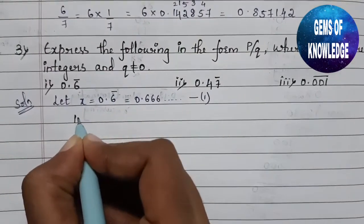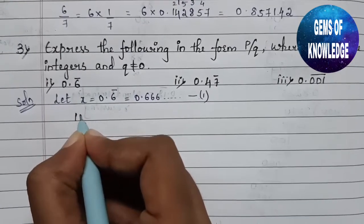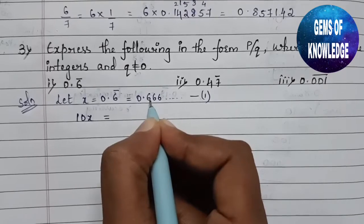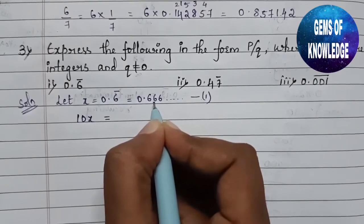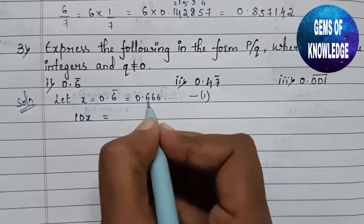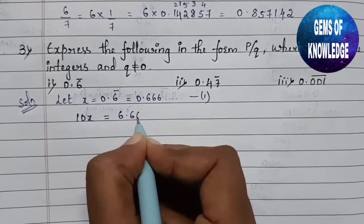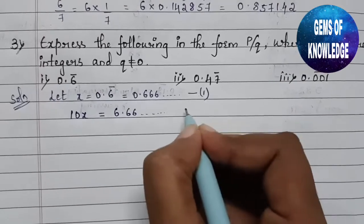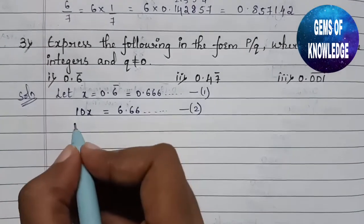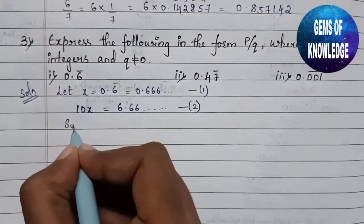After multiplying, we get 10x equals 10 times 0.666..., which gives us 6.666... and so on. Let this be equation 2. Now we are going to subtract equation 1 from equation 2.